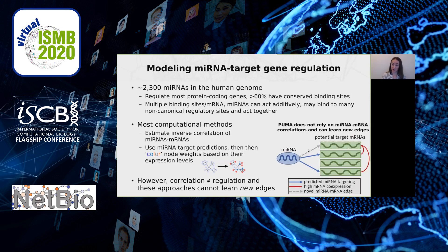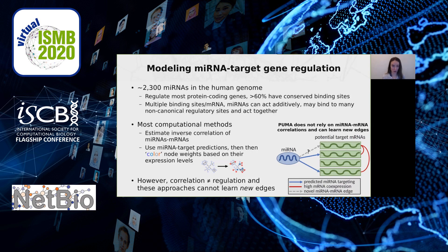PUMA does not rely on microRNA-mRNA correlations and can learn new edges. It does this by looking into patterns of co-expression of the target genes. So if a microRNA is known to regulate two predicted mRNA transcripts, shown with blue arrows, and these transcripts correlate with another transcript, PUMA will be able to capture this novel microRNA-mRNA edge.